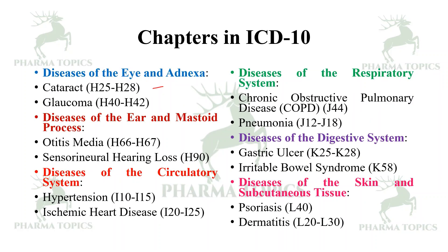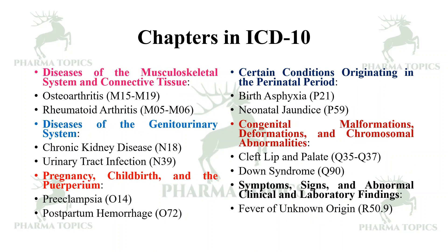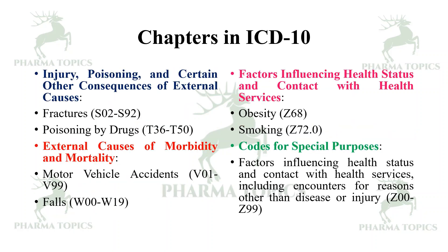There are also codes for diseases of the eye and adnexa such as cataract and glaucoma, diseases of the ear and mastoid process, diseases of the circulatory system, diseases of the respiratory system, and digestive diseases such as gastric ulcer and irritable bowel syndrome. Skin diseases like psoriasis and dermatitis, musculoskeletal diseases like arthritis, genitourinary diseases, pregnancy conditions such as preeclampsia, perinatal conditions like birth asphyxia, congenital diseases like cleft palate and Down syndrome, and codes for injury, poisoning, and external causes of mortality like accidents and factors such as obesity and smoking are all included.